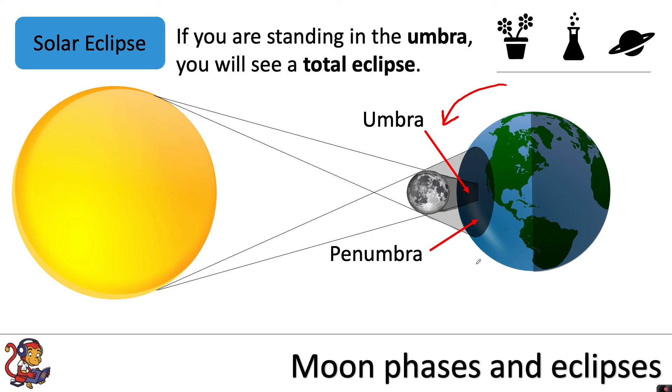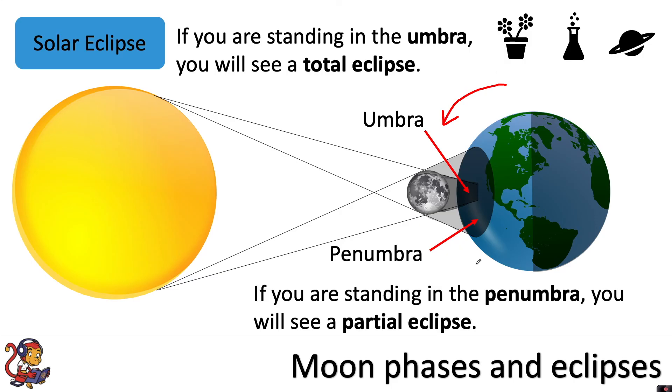If you are standing in the umbra you will see a total eclipse. And if you are standing in the penumbra you will see a partial eclipse.